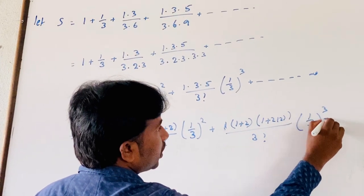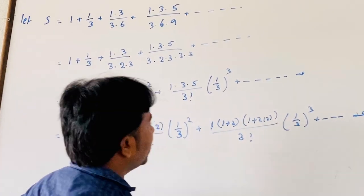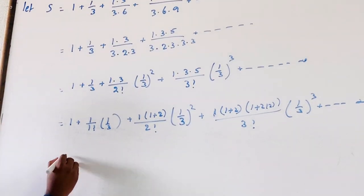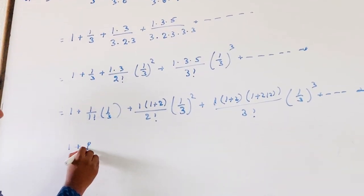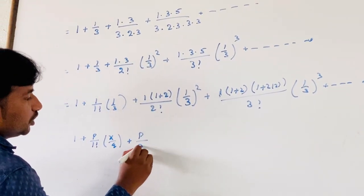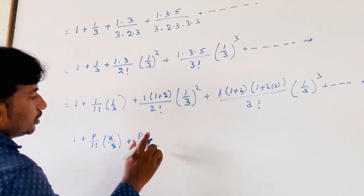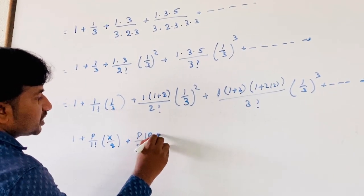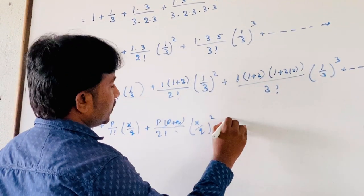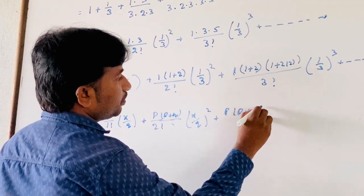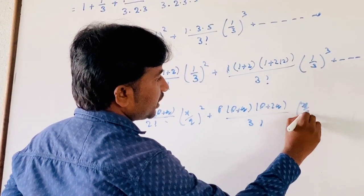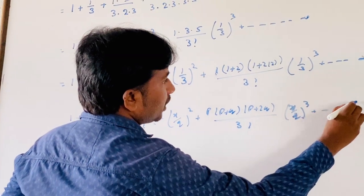By comparing this with the binomial expansion: 1 + p/(1!) · (x/q) + p(p+q)/(2!) · (x/q)² + p(p+q)(p+2q)/(3!) · (x/q)³ and so on to infinity.